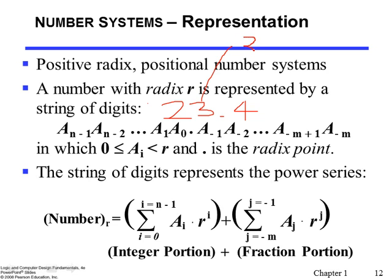The digit 3 represents the value three, and its position is the first position to the left of the radix point — radix ten to the zeroth power. The digit 2 has value two, and the weight of that position is ten to the first power, so twenty is the value of that place. The digit 4 represents four times the weight; its position is after the radix point, so the exponent is negative one. Thus 23.4 equals two times ten to the one, plus three times ten to the zero, plus four times ten to the negative one. That is how a number in the radix system is represented in general.